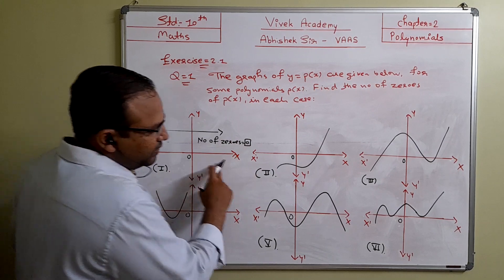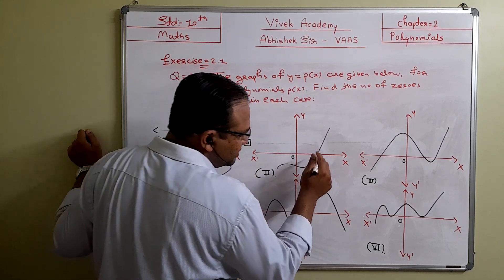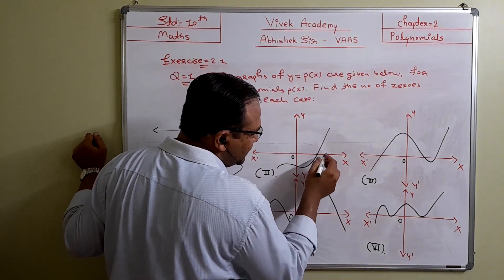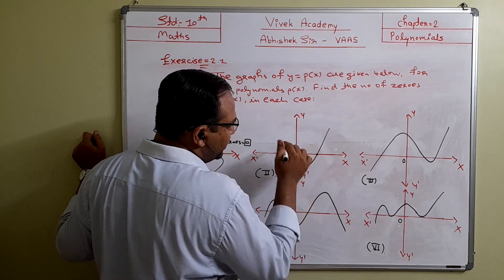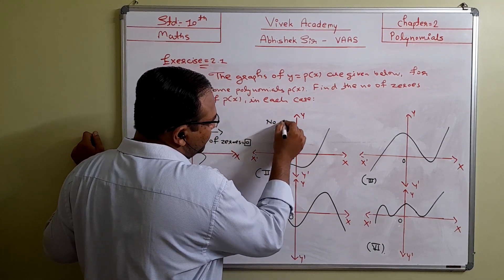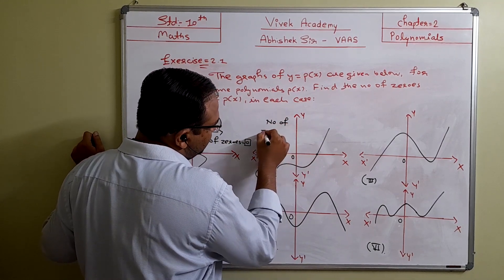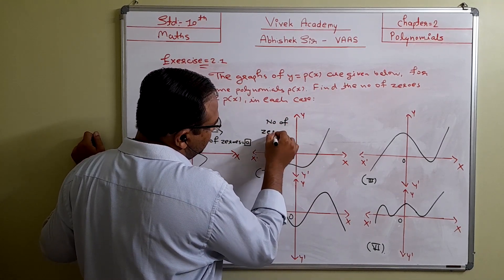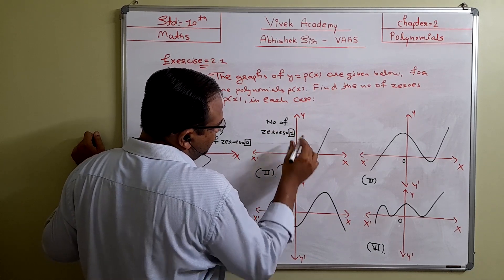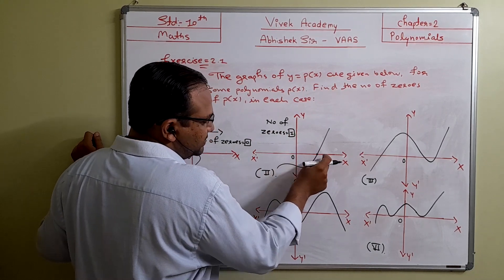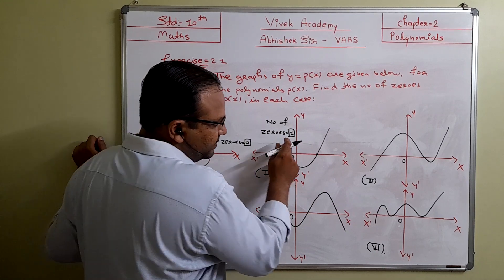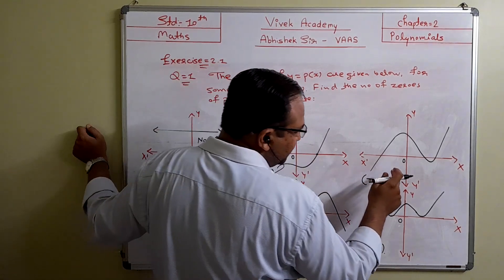In question 2, the graph is touching or intersecting the x-axis at exactly one point, so the number of zeros is 1.